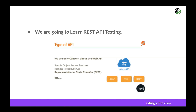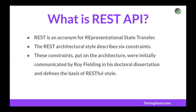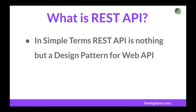REST stands for Representational State Transfer. It is not a protocol but an architectural style described by six constraints. In simple terms, REST is a design pattern for web APIs — any web API that follows these six constraints is called a RESTful API. These constraints were created by Roy Fielding during his PhD dissertation. Currently about 65% of people are using REST APIs.